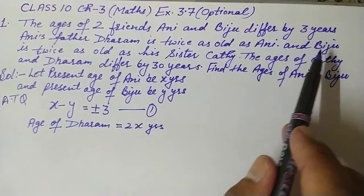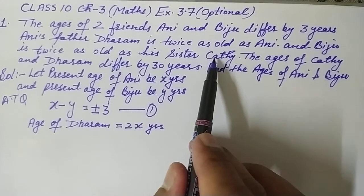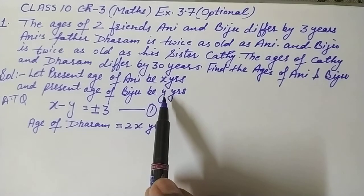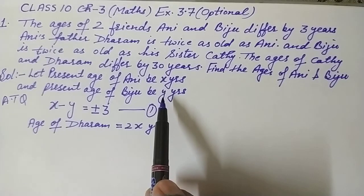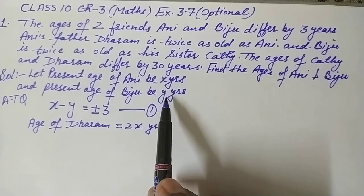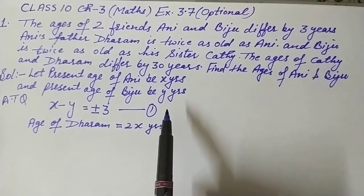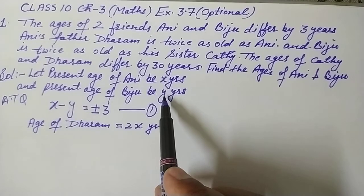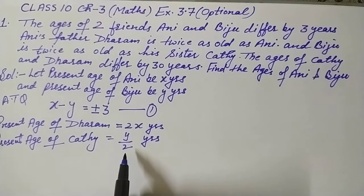The next condition is that Biju is twice as old as his sister Cathy. Biju's age is Y years, so Cathy is half of Biju's age. It means the present age of Cathy is Y over two.